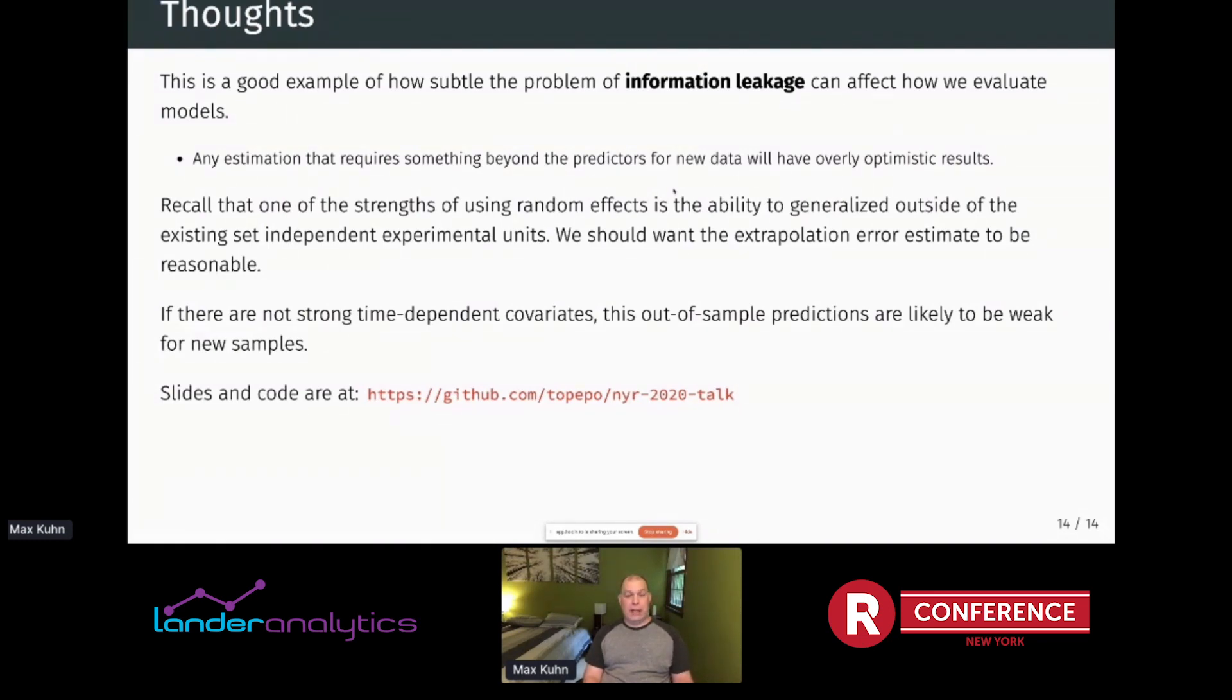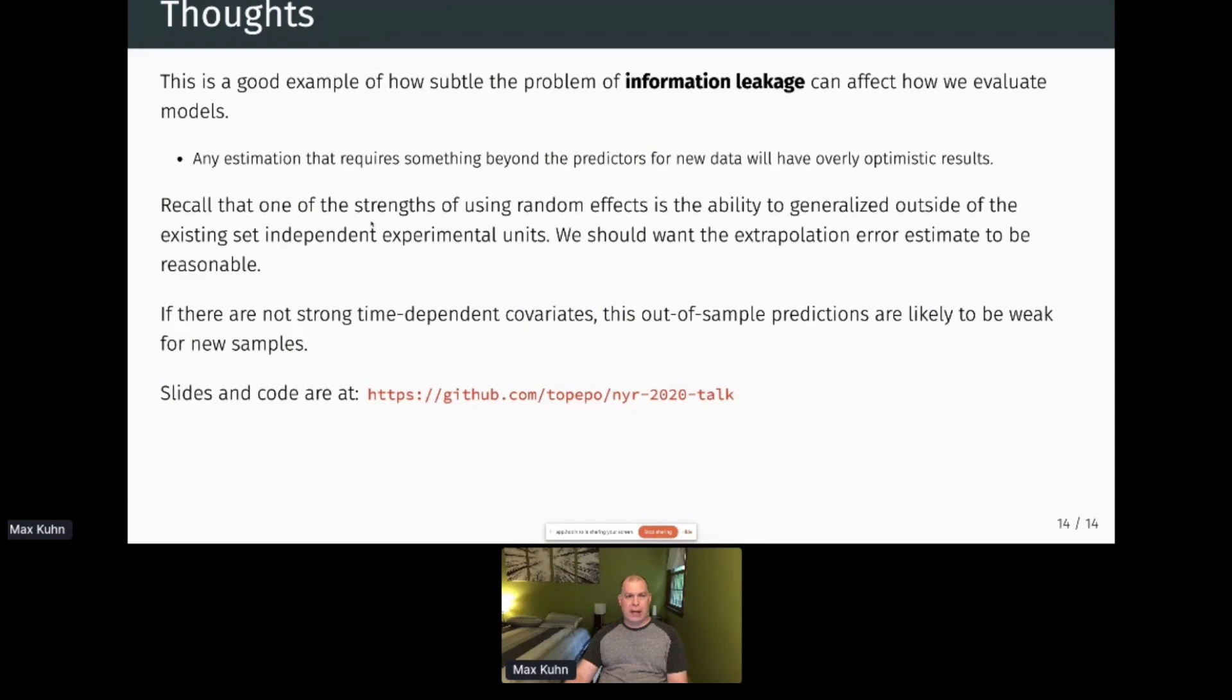It's a little bit problematic because if you think about why we use these types of models, we use them because they generalize well in inference. So when we make inferences about the effect of week over time on depression, we want to make that inference to the larger population of subjects. And so if our generalization error for these types of models is very large compared to their in-sample error, it does make you wonder about the quality of our inference in terms of generalization. One caveat to this - I mentioned I tried this on a bunch of different data sets and saw the same patterns - but if you did have strong time-varying covariates, then this wouldn't really happen so much because you'd be diminishing the effect of slope and intercept.